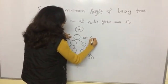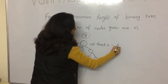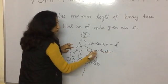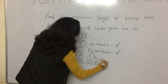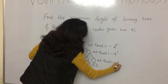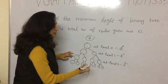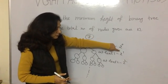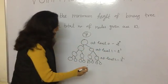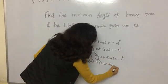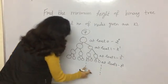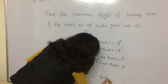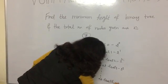At level 0, the total number of nodes would be 1, which is 2 raised to the power 0. At level 1, total nodes are 2, which is 2 raised to the power 1. At level 2, total nodes are 4, which is 2 raised to the power 2. Generalizing: at level H, the total number of nodes are 2 raised to the power H. So to get the total N nodes, I have to go till level H.